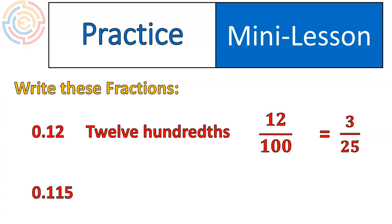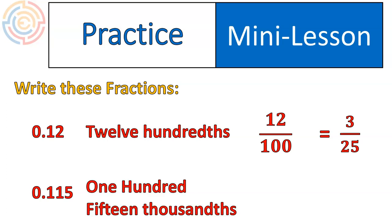All right. Try this one out. Very similar to our last example. This is 0.115. That is one hundred fifteen thousandths, which is written as one hundred fifteen over a thousand, or simplified down to twenty-three over two hundred.